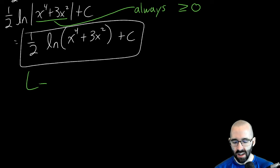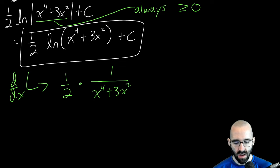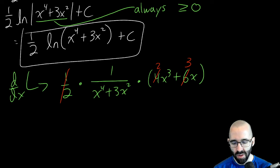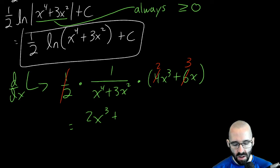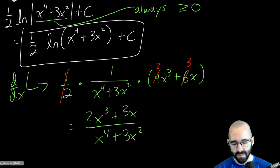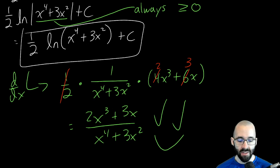Our final answer is (1/2)·ln(x⁴ + 3x²) + C. We check by taking the derivative: (1/2) times 1/(x⁴ + 3x²) times the inside derivative (4x³ + 6x). The 1/2 and the 2 cancel, the 3 simplifies, and we get (2x³ + 3x)/(x⁴ + 3x²) — exactly what we started with. A great way to check your answer and review derivative rules at the same time.